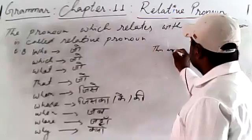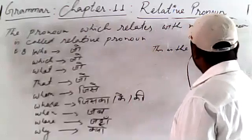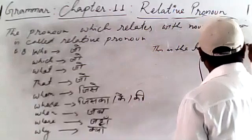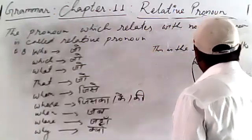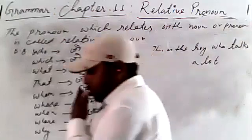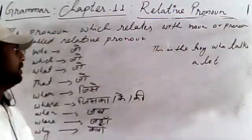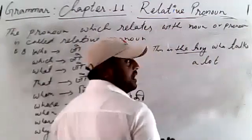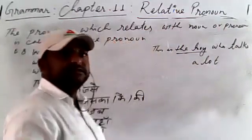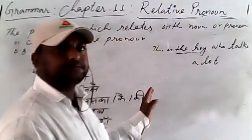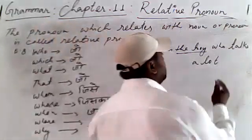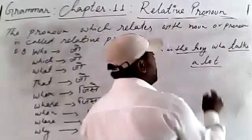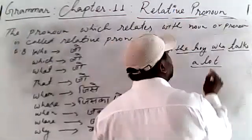For example: this is the boy who talks a lot. Here 'boy' is the noun, and 'who talks a lot' uses 'who' as a relative pronoun relating back to the noun 'boy'.